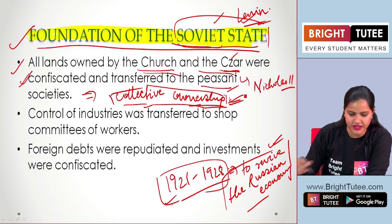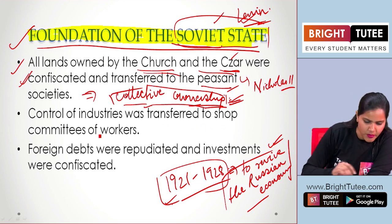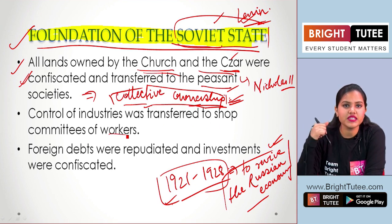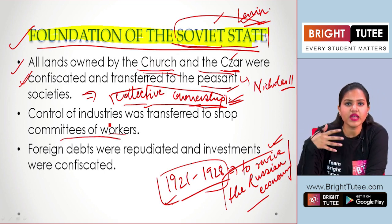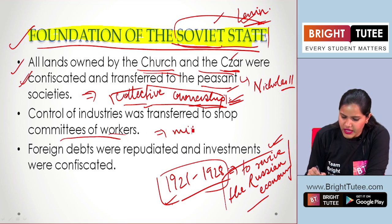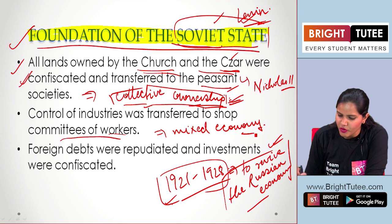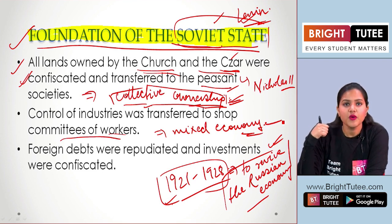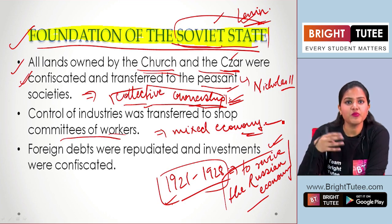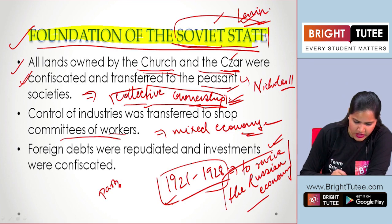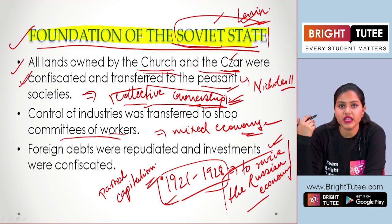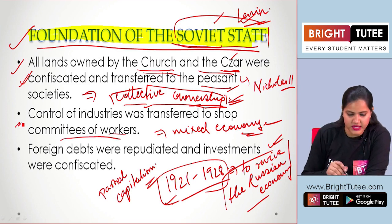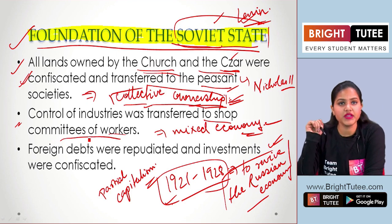The control of industries was transferred to the shop committees of workers. Now if you remember the New Economic Policy, private individuals — in fact the workers — were also given shops to own so that they could earn some profit. So during the New Economic Policy introduced by Lenin's government, we see a mixed economy where the state had control, but there was also partial capitalism, with shops given to private individuals as well.